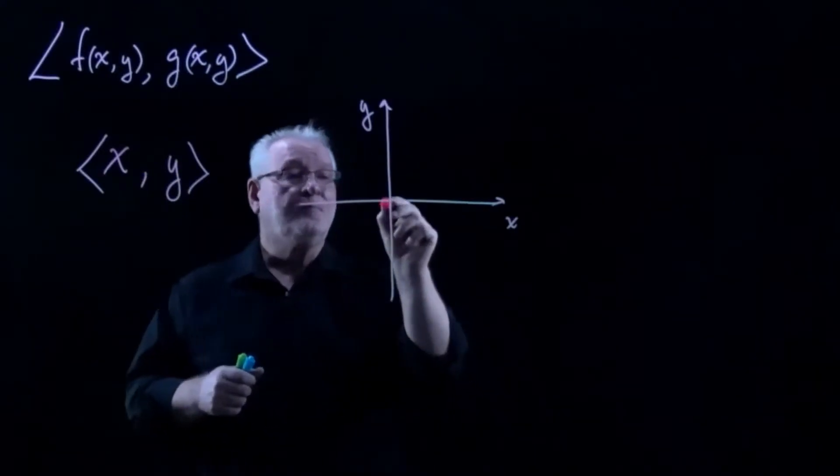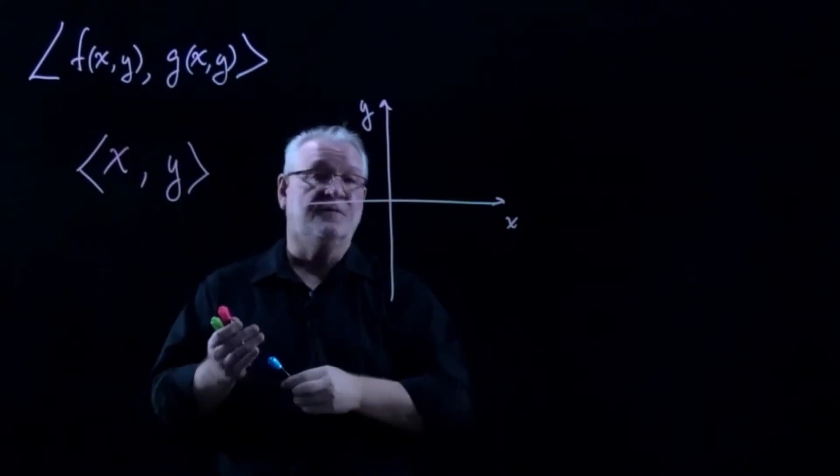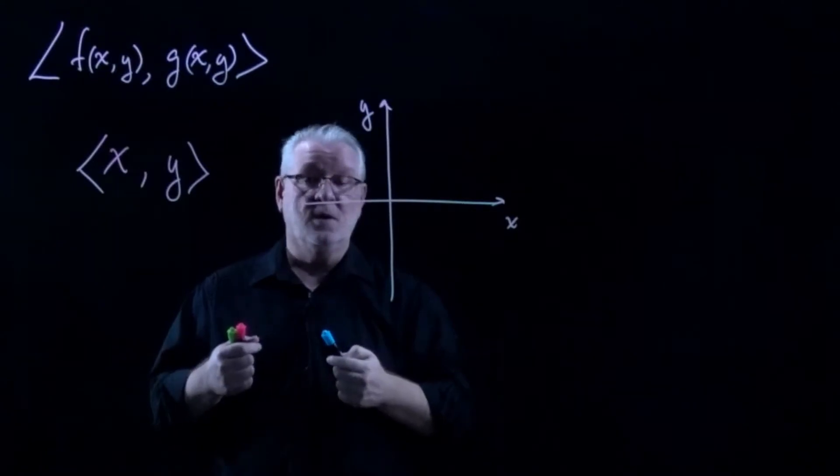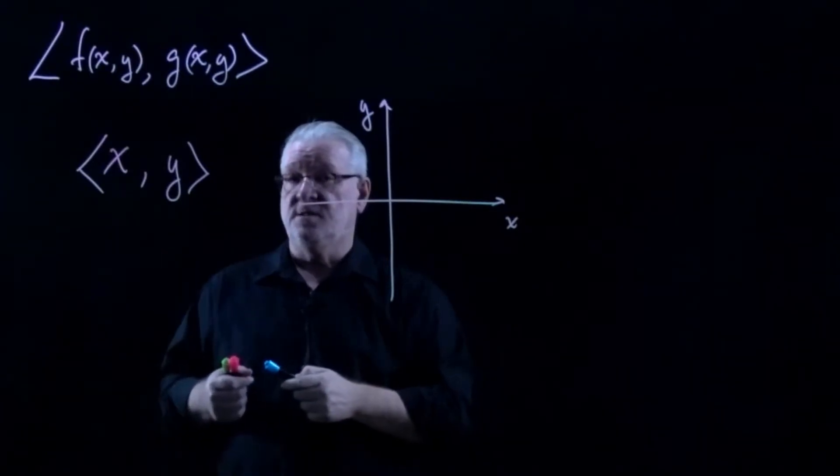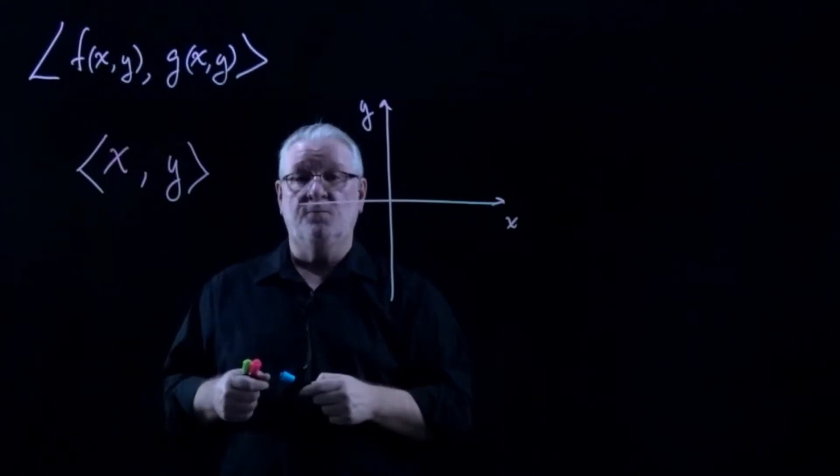So what this predicts is right here at the origin, the vector field is going to have a magnitude of zero, because not only is the location (0,0), but the magnitude of that vector will be (0,0).